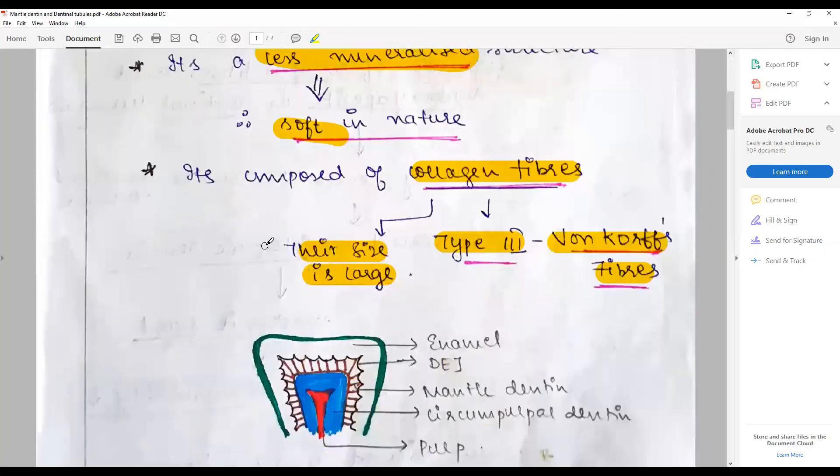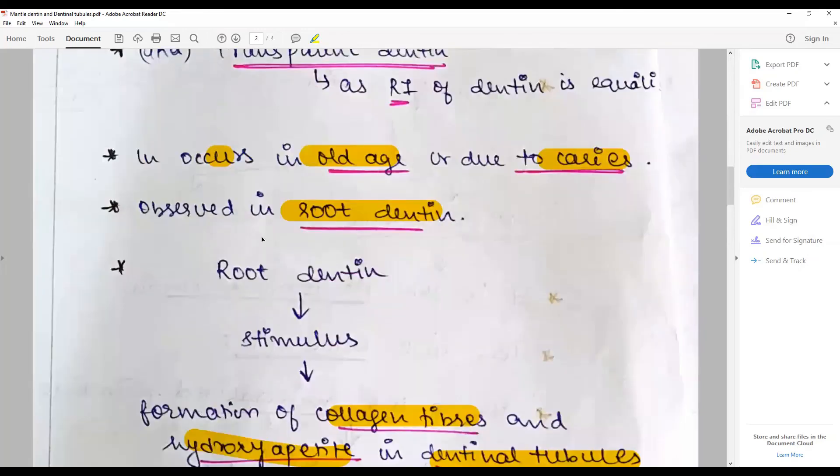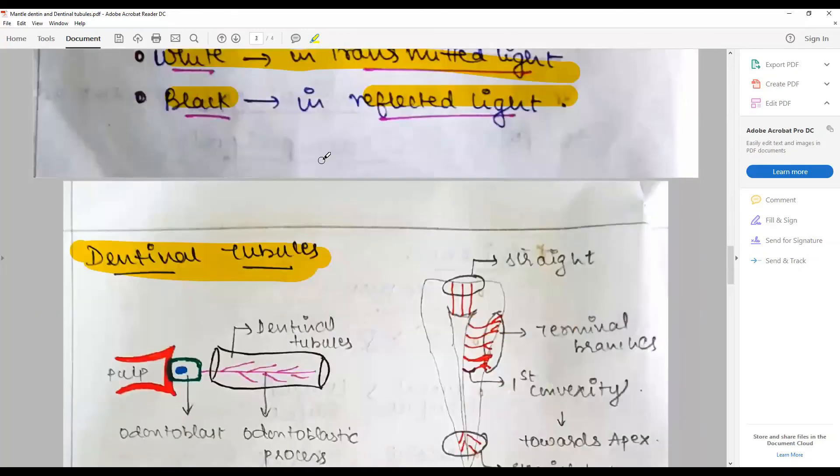That brings to an end the discussion on mantle dentine, odontoblastic process, pre-dentine, sclerotic dentine, and dentinal tubules. Stay connected with this channel for another episode of One Question a Day. Happy learning till then.